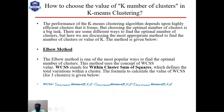How to choose the value of K — the number of clusters in K-Means clustering. The performance of the K-Means clustering algorithm depends on highly efficient clusters, but choosing the optimal number of clusters is a big task. The most important method to find the optimal K is the Elbow Method. The Elbow Method uses the concept of WCSS value — WCSS stands for Within Cluster Sum of Squares.